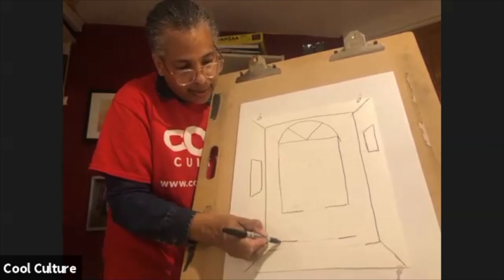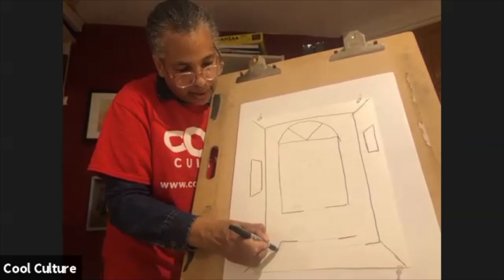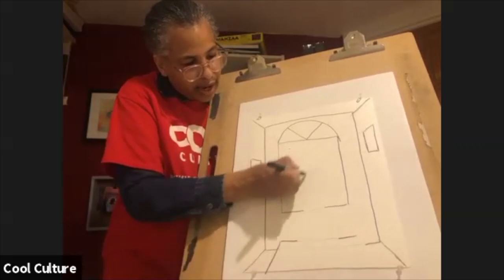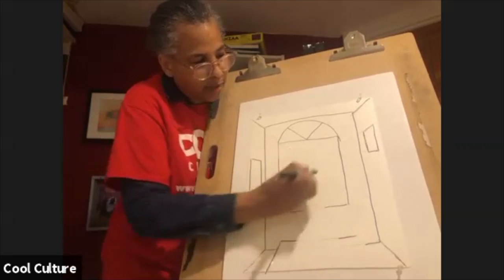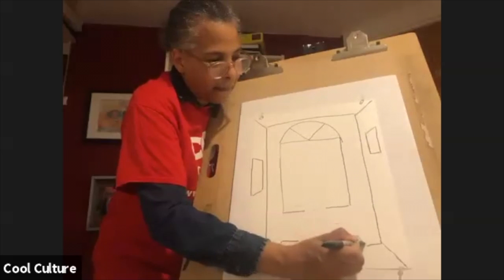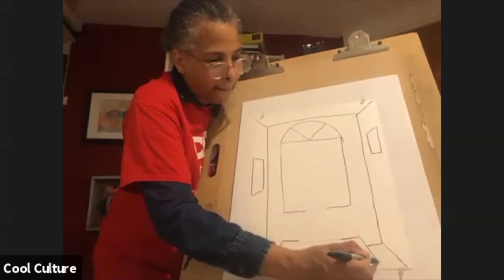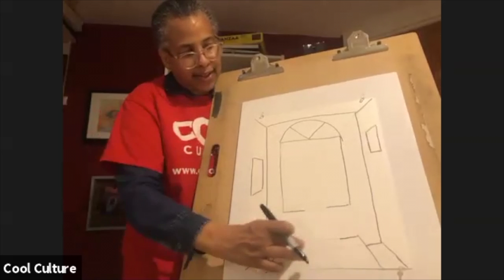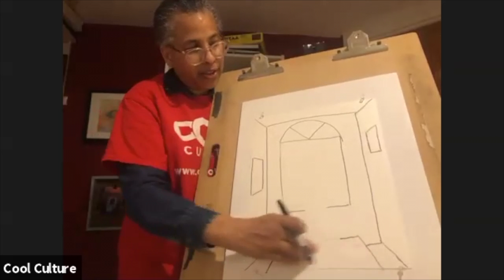Using our vanishing point, we create a line coming from our vanishing point, and that's a table in the room.